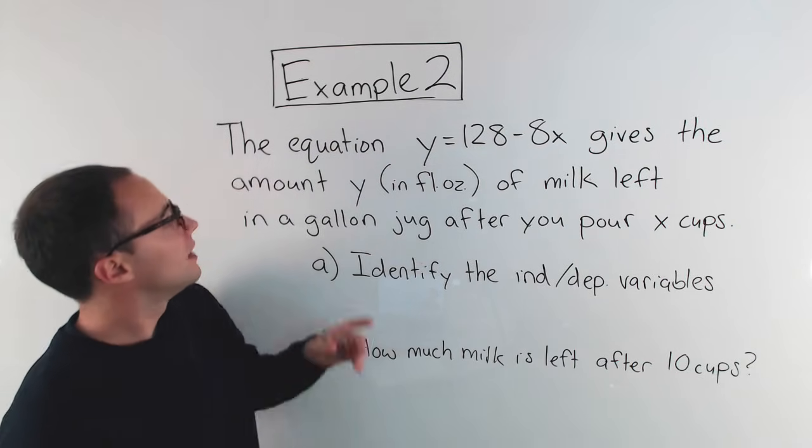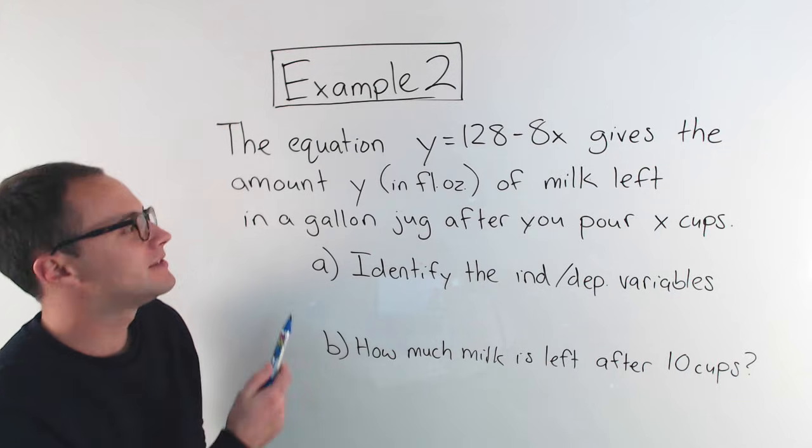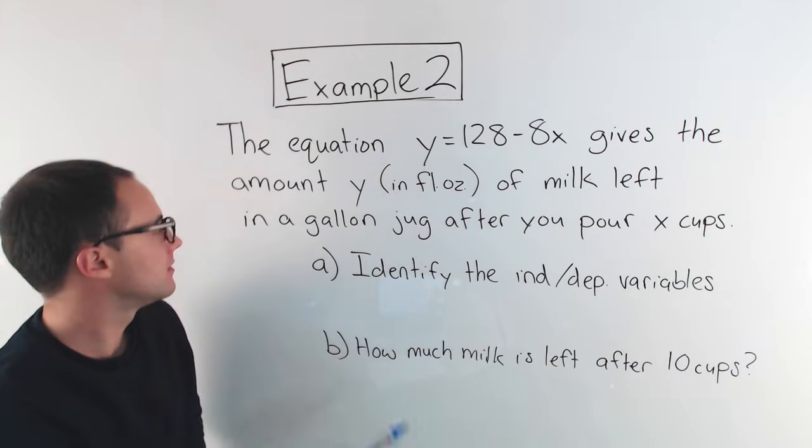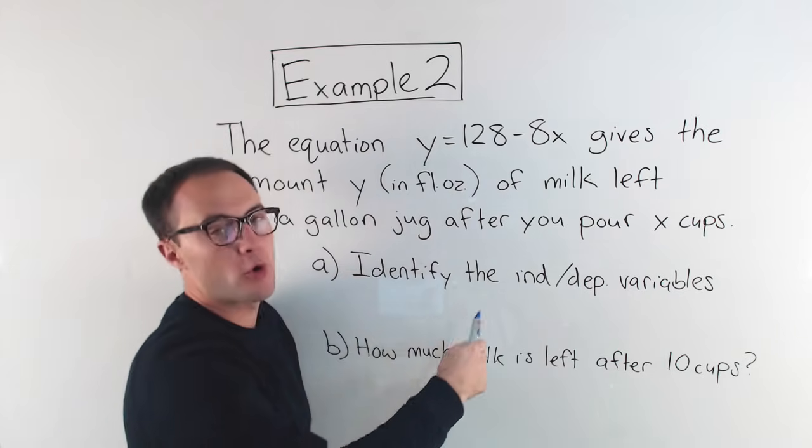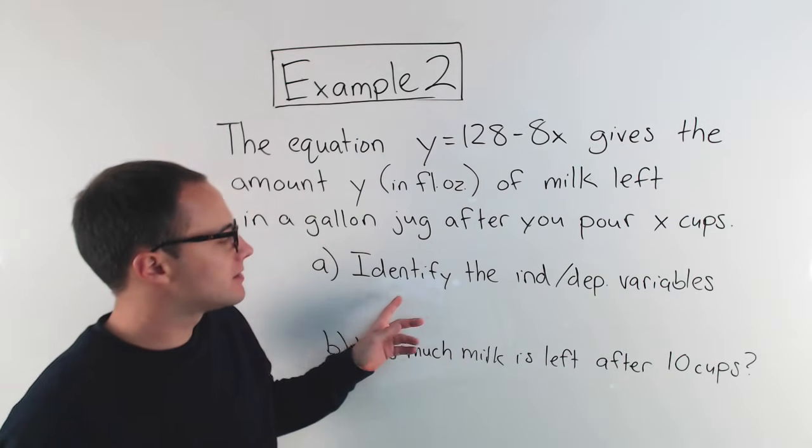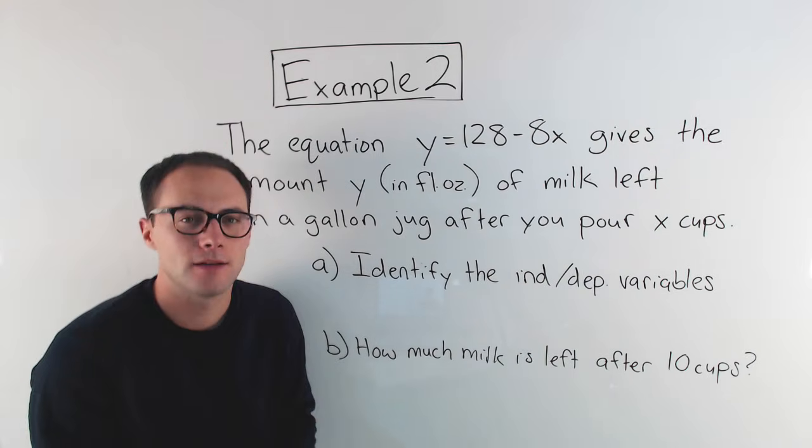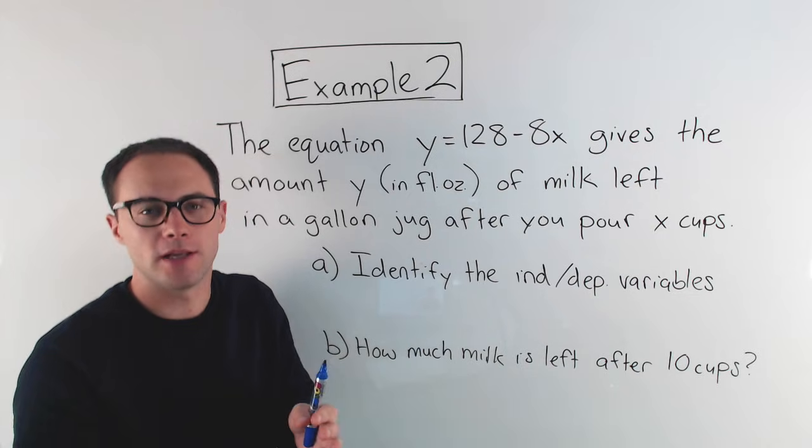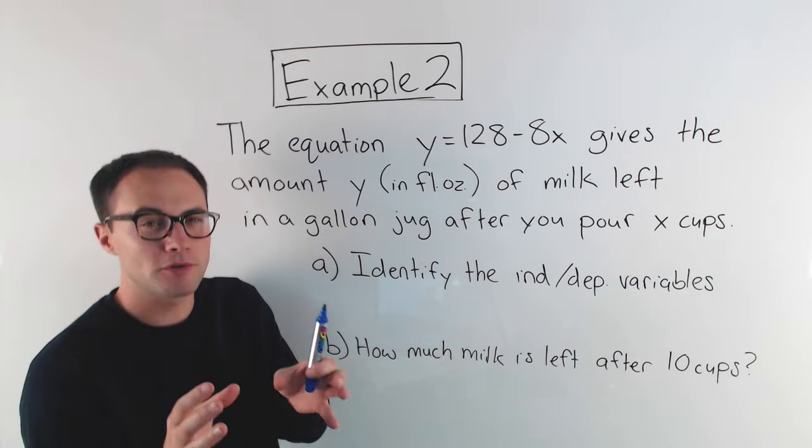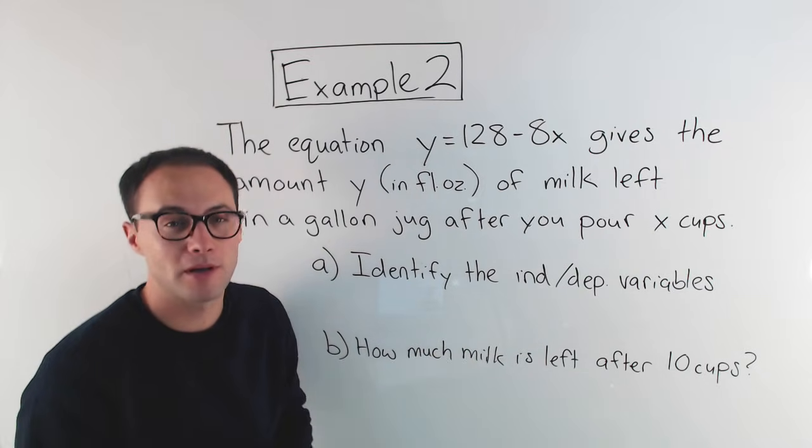Here we go with example two. The equation y equals 128 minus 8x gives the amount y, in fluid ounces, of milk left in a gallon jug after you pour x amount of cups. So first, part a is identify the independent and dependent variables. Independent, that's the thing that changes freely. That's the thing that we would decide. Dependent variables depend on what you decide with the independent, what you do first with the independent variable.